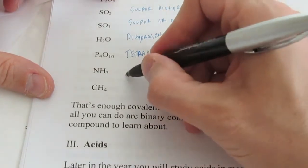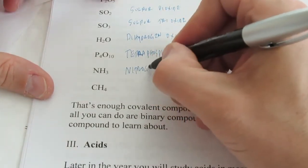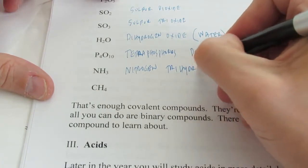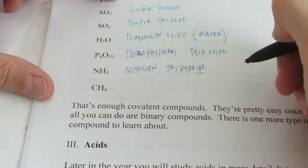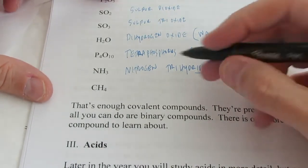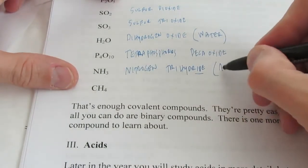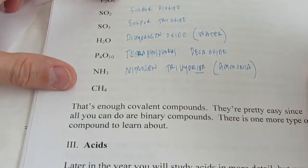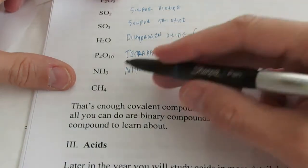NH3 is nitrogen trihydride. Remember the second element, we always end in -ide. Now, I hope you don't call it nitrogen trihydride. Please try to remember that NH3, the common name, is almost always used. And it's called ammonia. NH3 is ammonia.